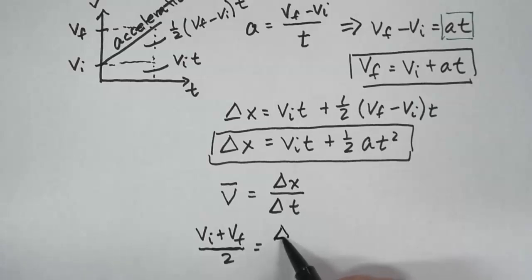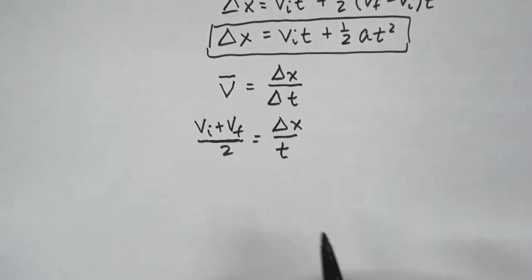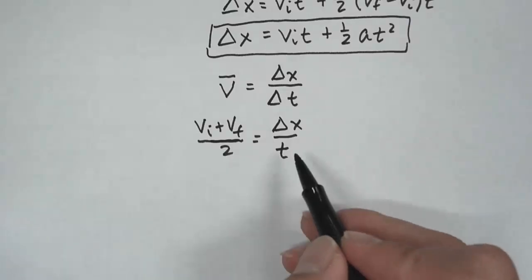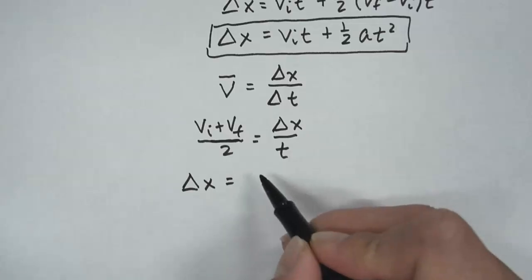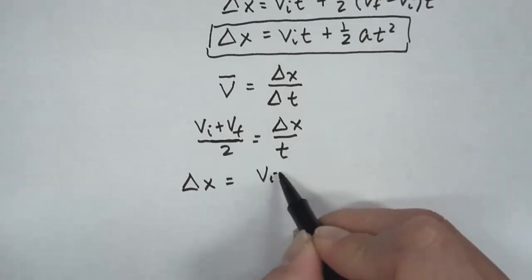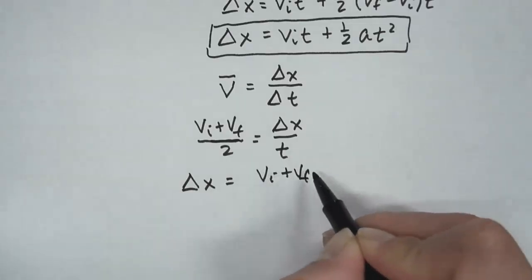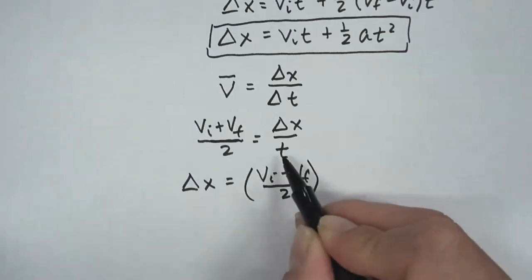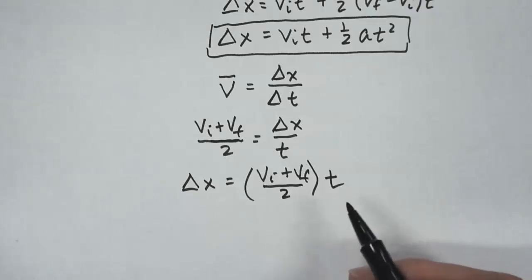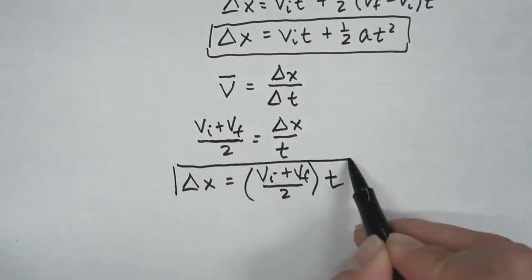So this is equal to delta x over, and then see once again, ti is just 0, so I'm just going to write t here. So now I'm going to solve for delta x. And so delta x will be equal to vi plus vf divided by 2 times, I'm moving t to the other side, times t. And so this is the third kinematic equation.